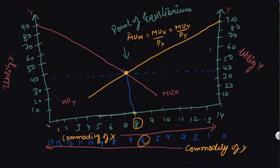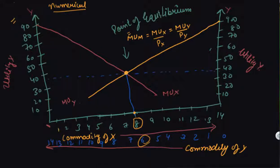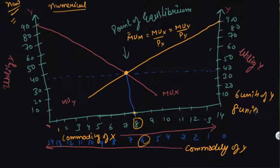We got the same type of answer as when we did it numerically through the tables. This is a different example from the numerical one — do not relate the graph and the table together, as this is a new example done just to explain the concept. In this graph we have 6 units of Y and 8 units of X — this is the point where you get your equilibrium. I hope you liked the video. Do download our app, Scholars Learning, and if you have already downloaded it, enjoy the learning experience.